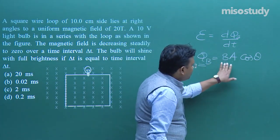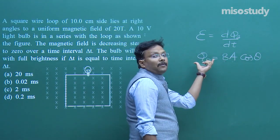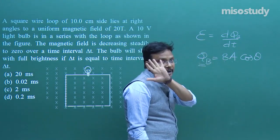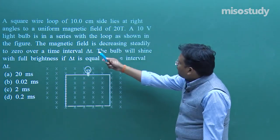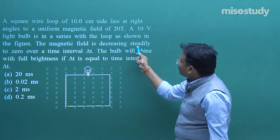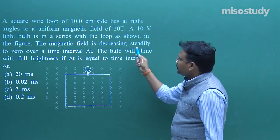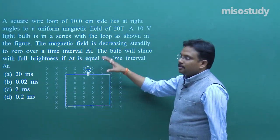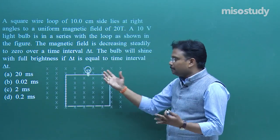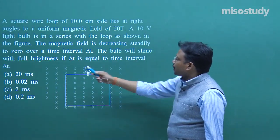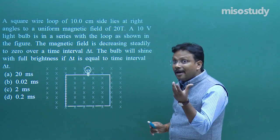Here, the magnetic field B is changing. Area A is the same and θ is the same. Because B is changing, an induced EMF will be present, which will force the bulb to light up. The bulb will shine with full brightness if Δt equals a specific time interval — the time in which the magnetic field decreases from its higher value to zero.